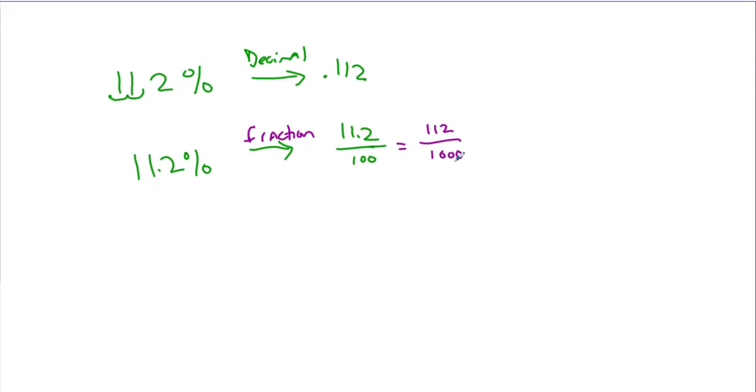If I had a fraction like 2 fifths and I wanted this to be a percent, I'm going to say let's do equivalent fractions, make it over 100. I'm not going to go through this, we'll just say this is 40. So this would be 40%.